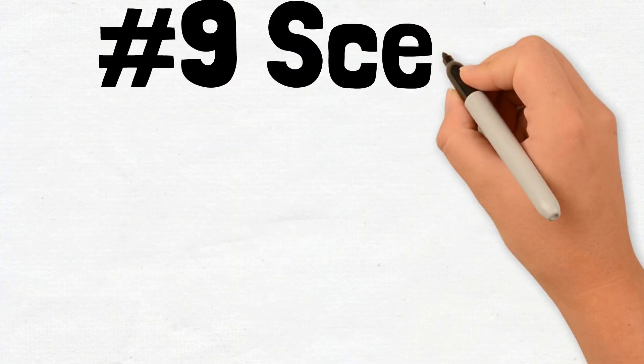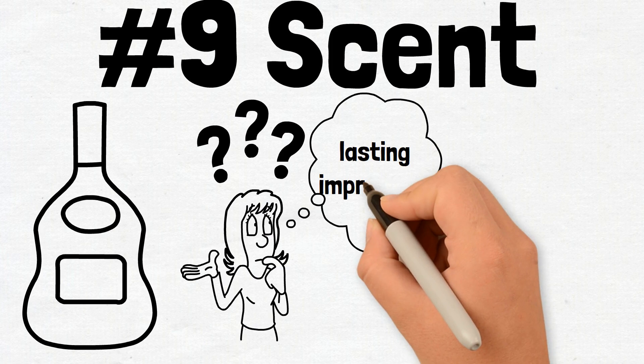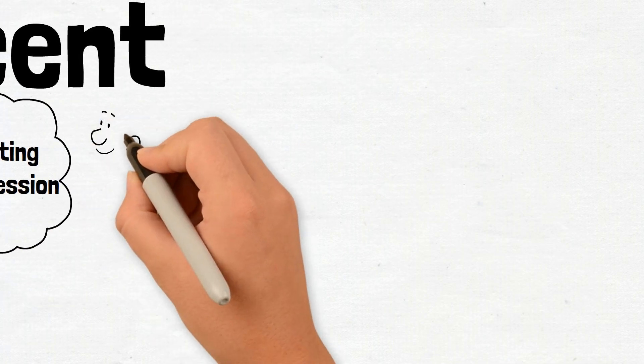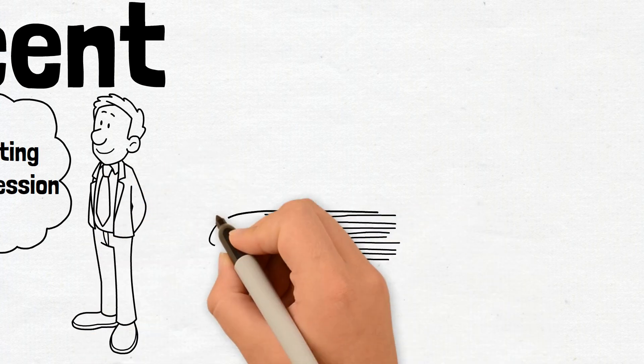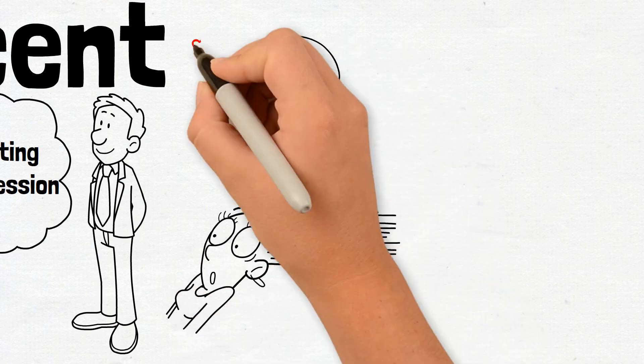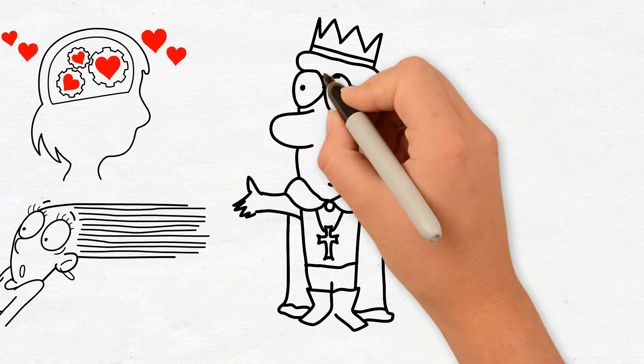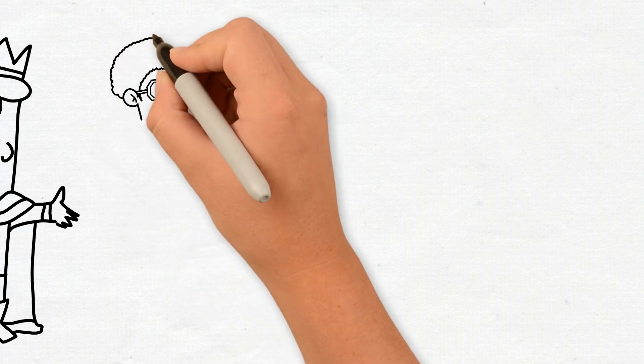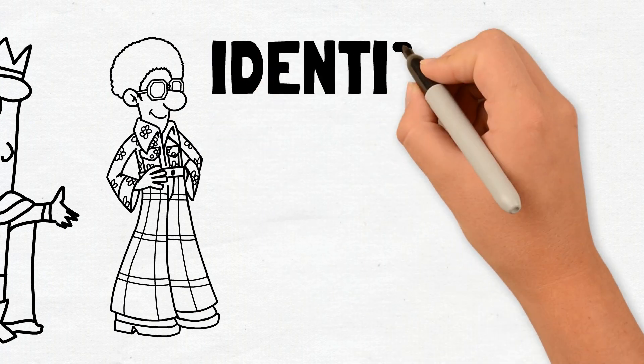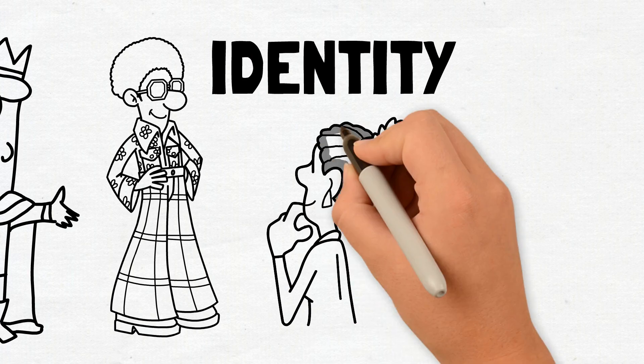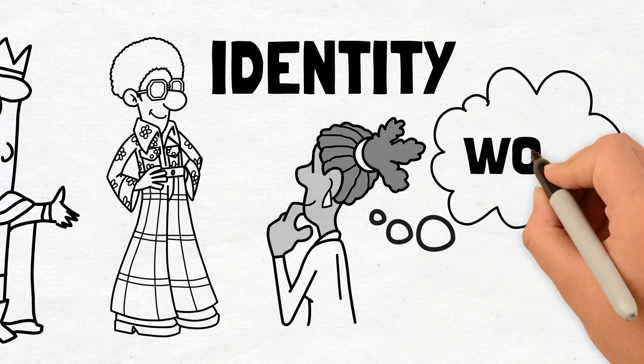9. Scent. Find a signature fragrance that complements your style and leaves a lasting impression. A well-chosen cologne can be an unforgettable part of your overall image. It's a subtle but effective way to make an impact, as scent is closely linked to memory. A pleasing fragrance adds an extra layer of sophistication to your presence. When you find a cologne that suits your personality and style, it becomes a part of your identity. It's something that women will remember you by, and it can leave a lasting impression long after you've left the room.